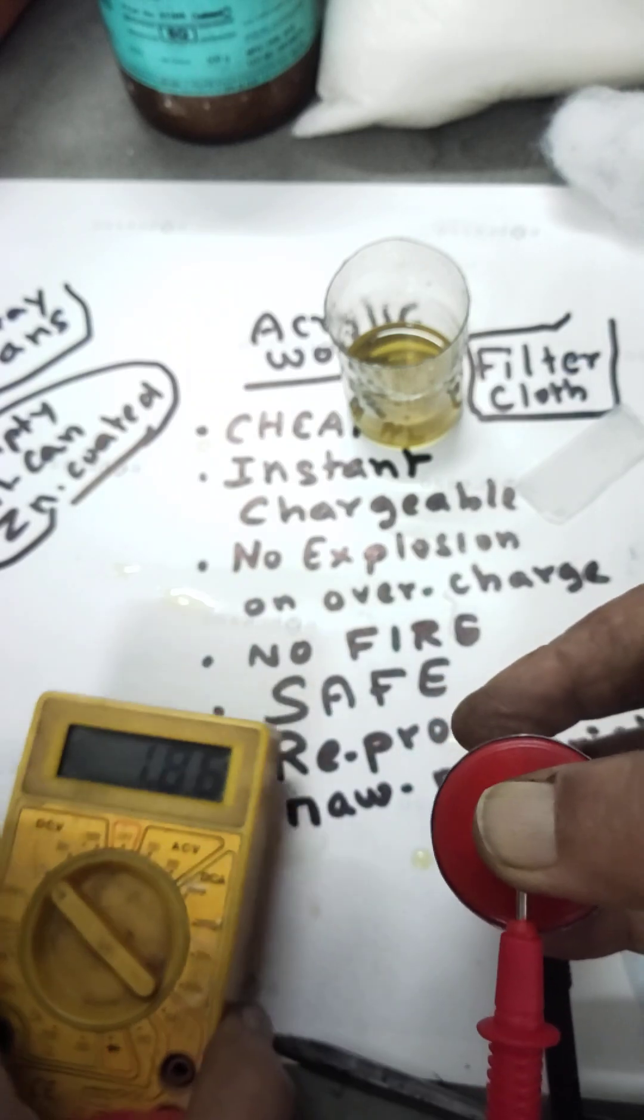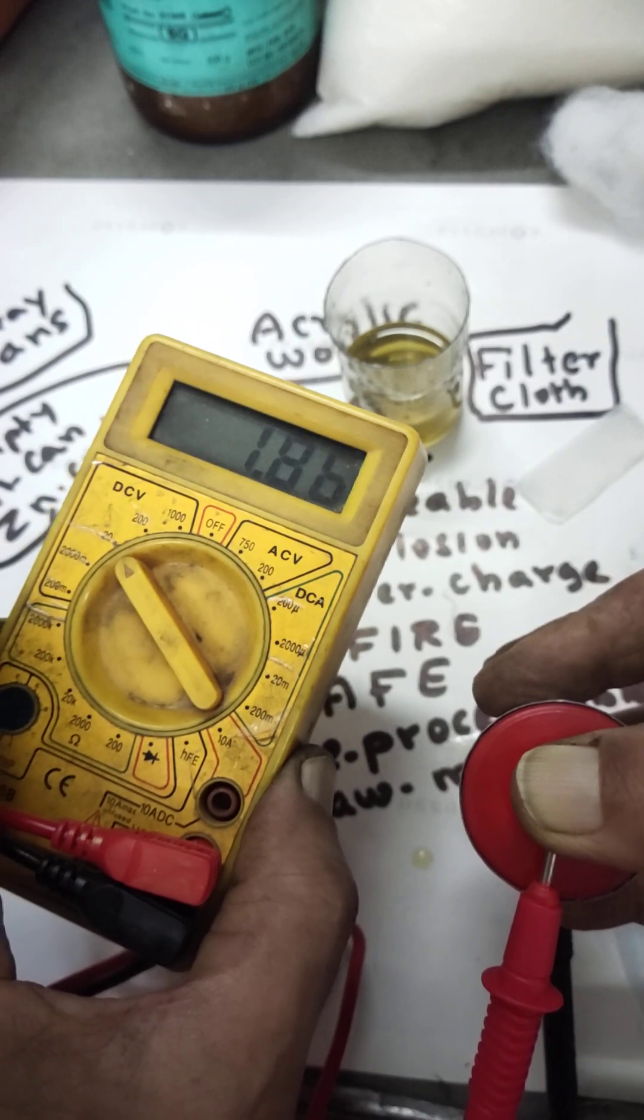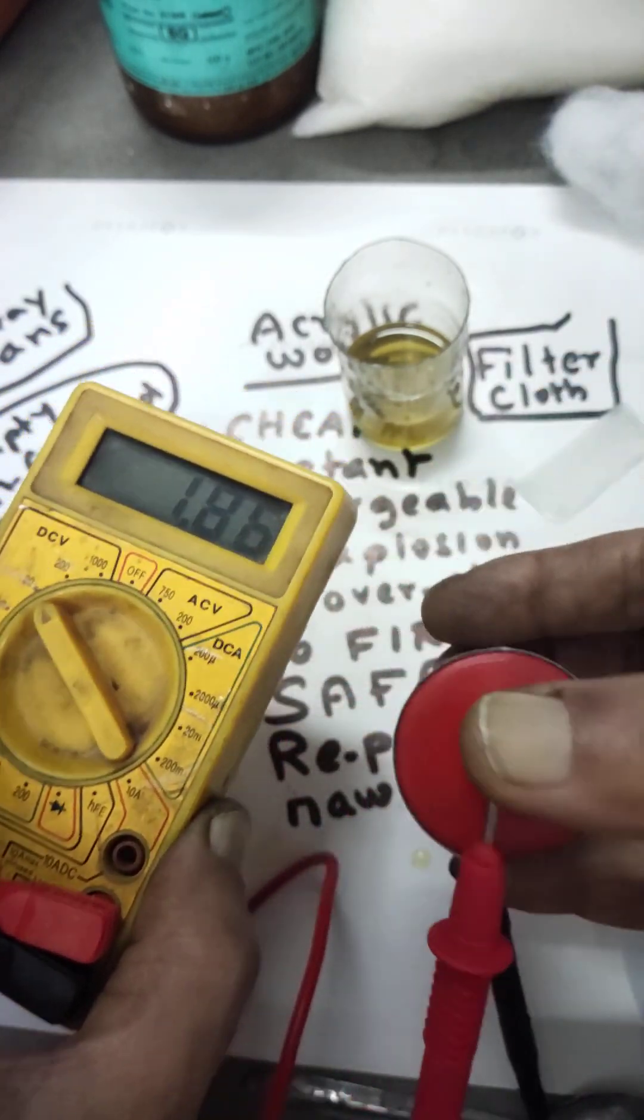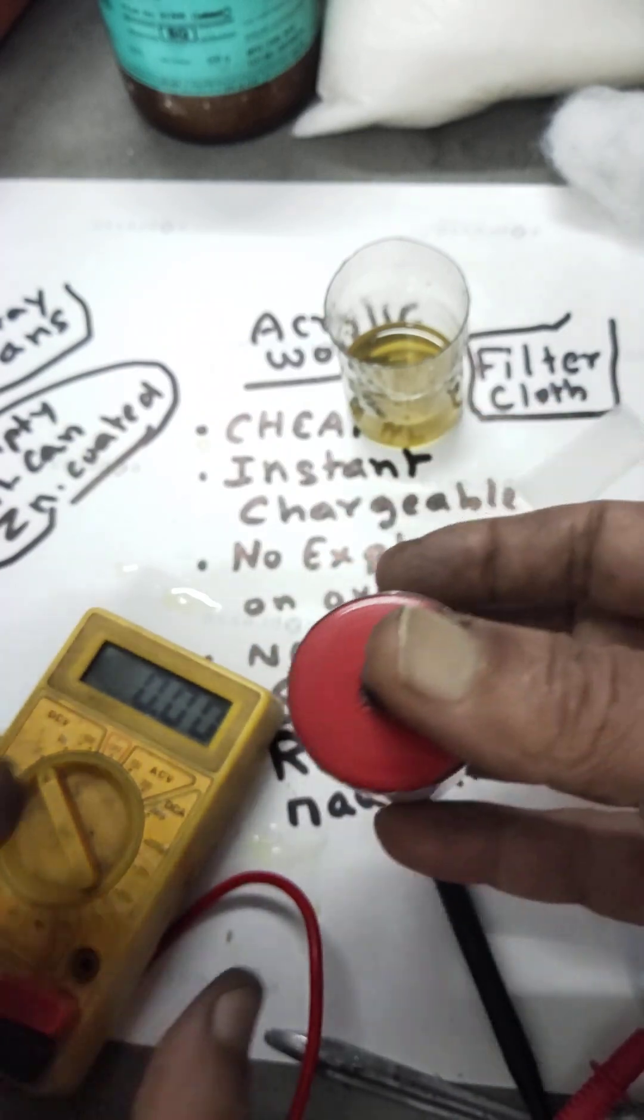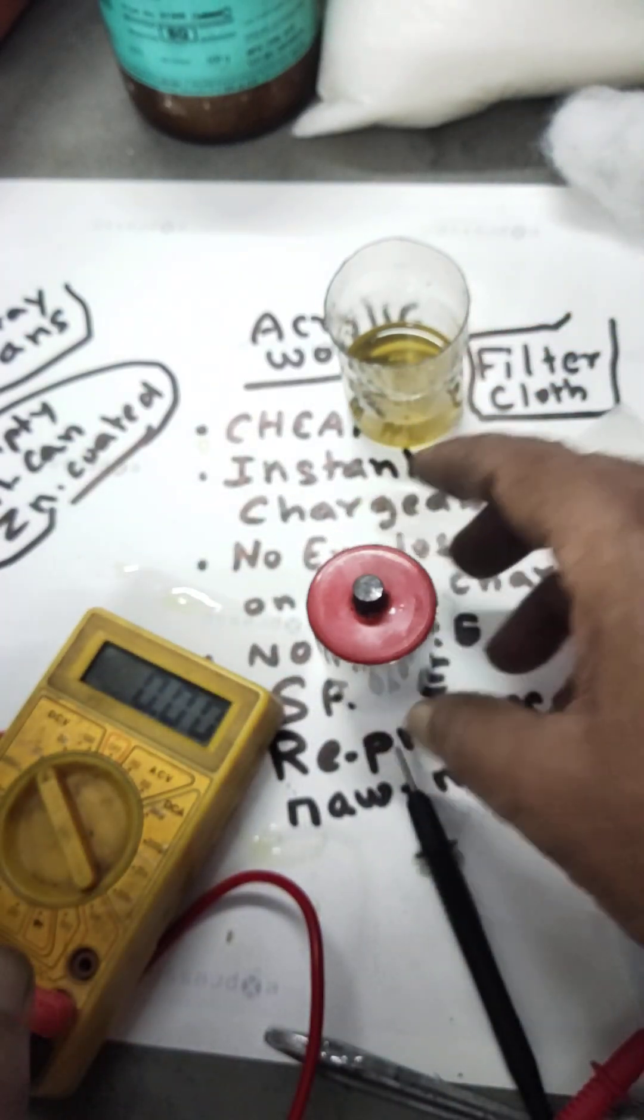You're able to see 1.86 volts is the voltage generating from this battery. Once stabilized it will give very good voltage. I've prepared this all in front of you.